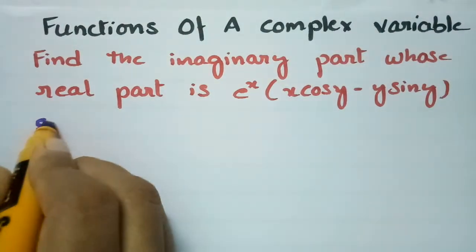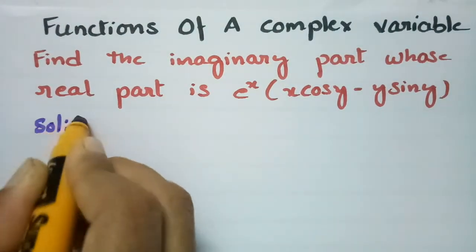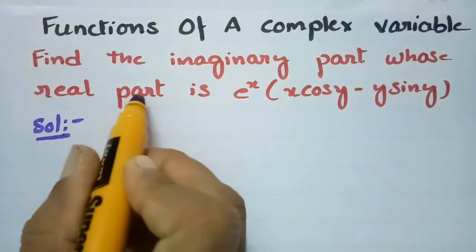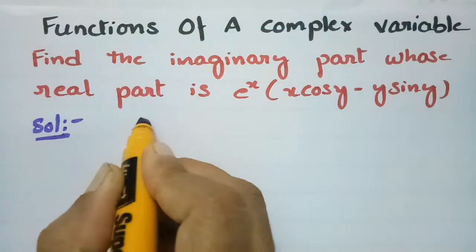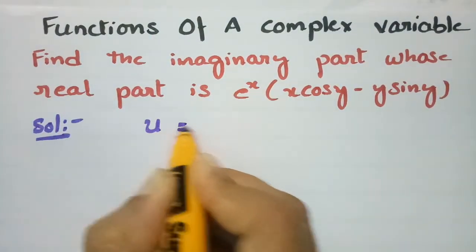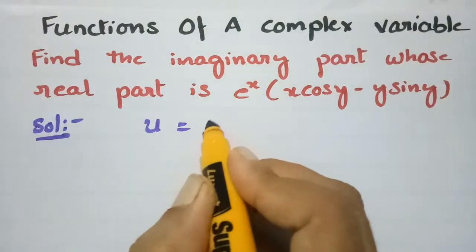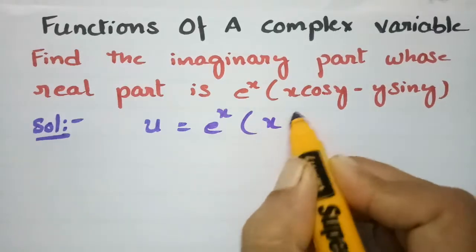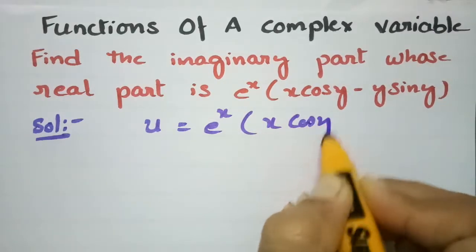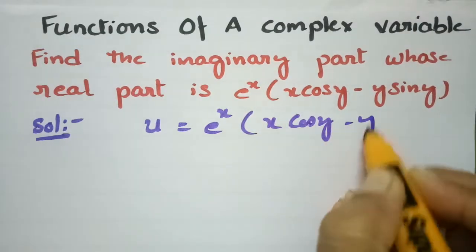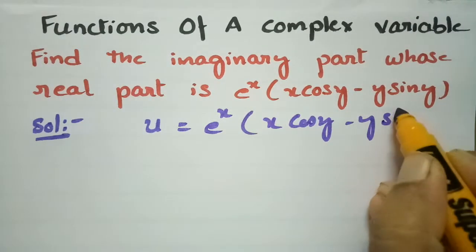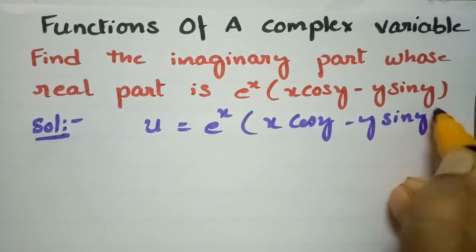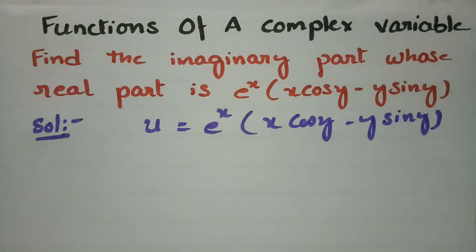In the solution, what is given? The real part is given. The real part is represented by u. So u is equal to e^x into (x cos y minus y sin y).